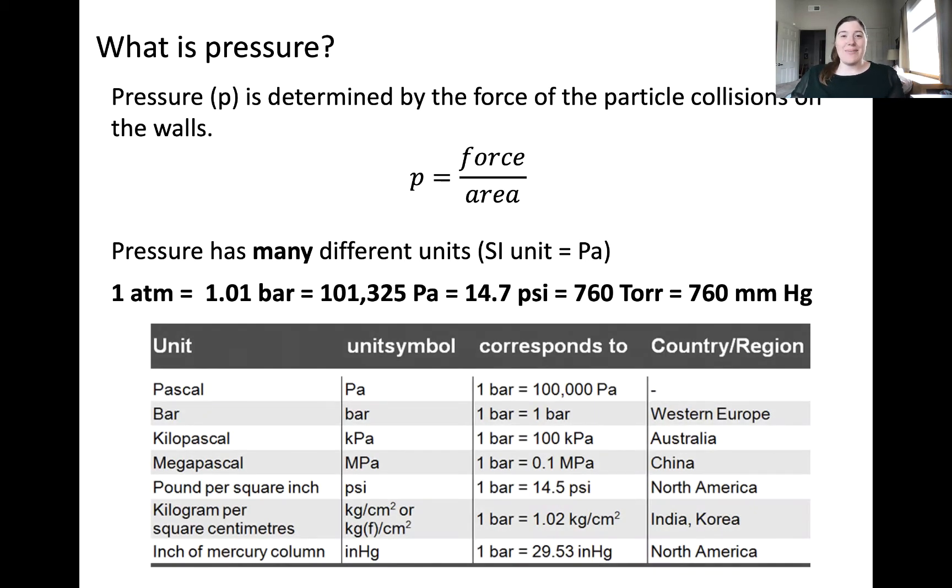You'll see in this table that it's common to use different units to report pressure in different areas of the world. For example, the pressure necessary to inflate car tires in America is most commonly reported in units of pounds per square inch, but you may see this pressure reported differently depending on where you are in the world.